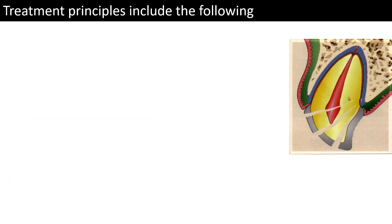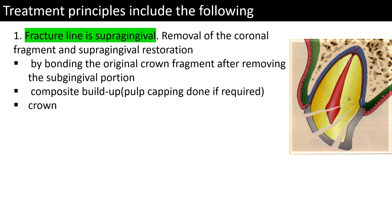The treatment depends largely upon the location of the fracture line. In the first situation where the fracture line extends supragingivally, and in the second situation as well, we can restore the tooth by bonding either the original crown fragment or with composite resin. In cases where the fracture is close to the pulp, we can do pulp capping with calcium hydroxide followed by restoration with GIC or composite, and finally give a crown.